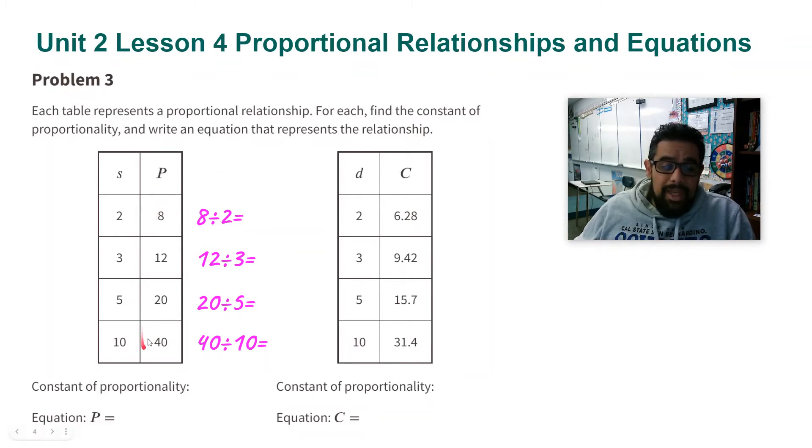So I'm doing P divided by S, eight divided by two, 12 divided by three, 20 divided by five, and 40 divided by 10. When you divide these out, you notice you get the same number. That number is four.